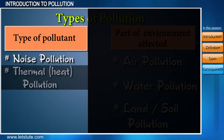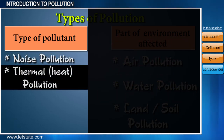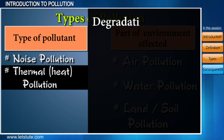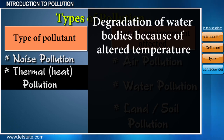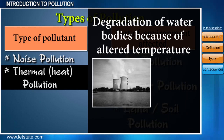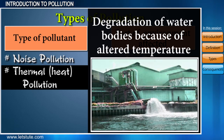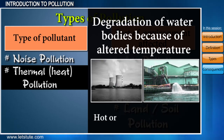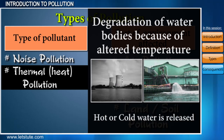Thermal pollution occurs when water bodies are degraded in terms of their temperatures being altered. This especially occurs in thermal and nuclear power plants, where large amounts of water are used for heating and cooling purposes and are then released into natural water bodies.